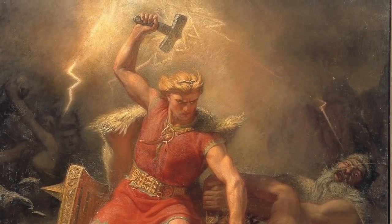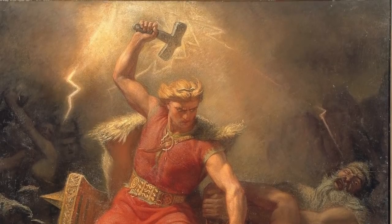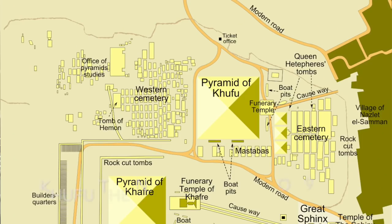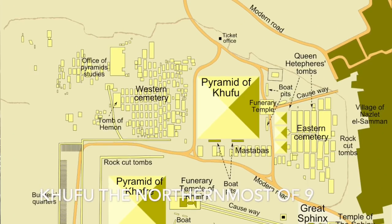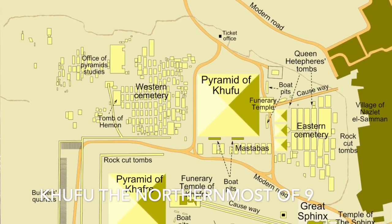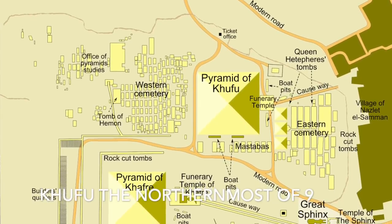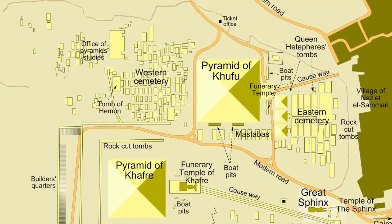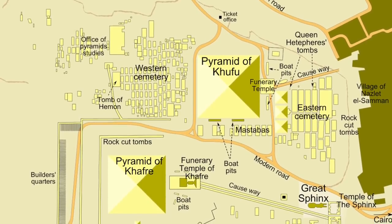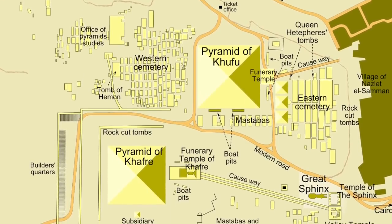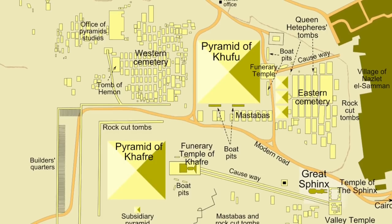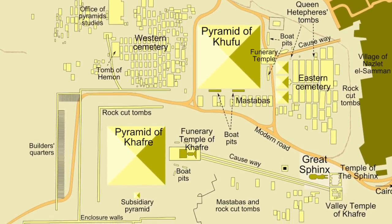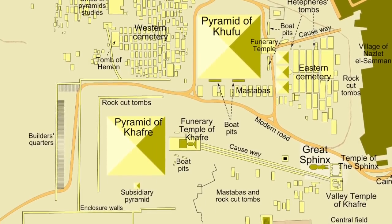To 'burg' we append 'mot,' which either means hill or moat — probably moat, since we've already mentioned the hill in 'burg.' So 'burgmot' is pyramid, and 'pyramid' seems to be the Greek version of this word.